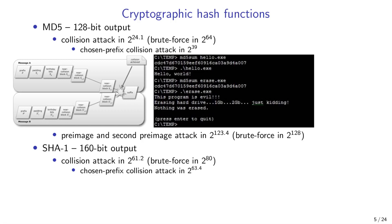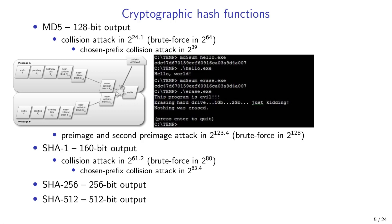Without these two partly broken hash functions, we have hash functions that have no weaknesses found as of today: SHA-256 with 256-bit output, SHA-512 with 512-bit output, and the SHA-3 function family with different output sizes. So when building new cryptosystems, pick one of these to stay on the safe side.